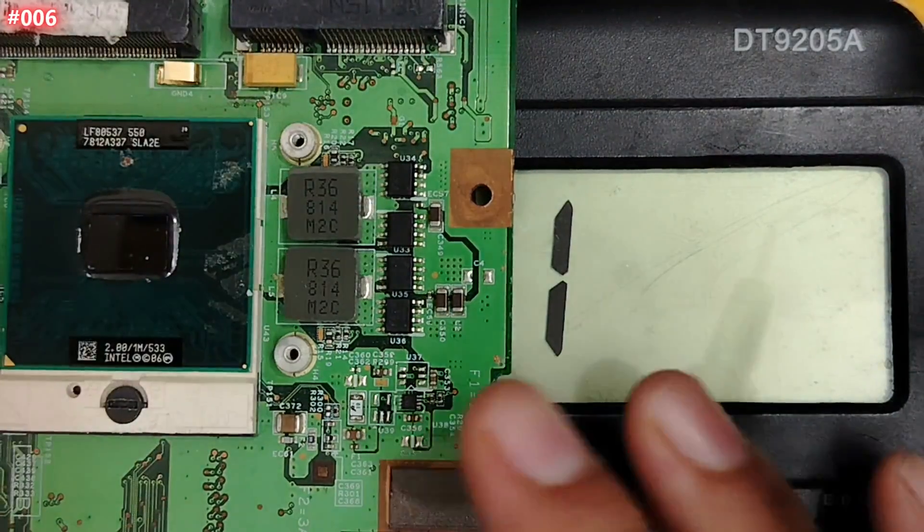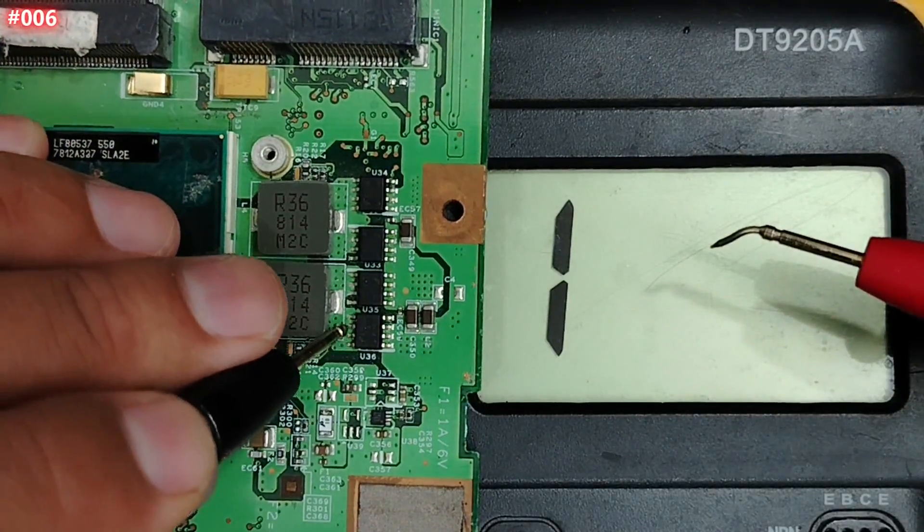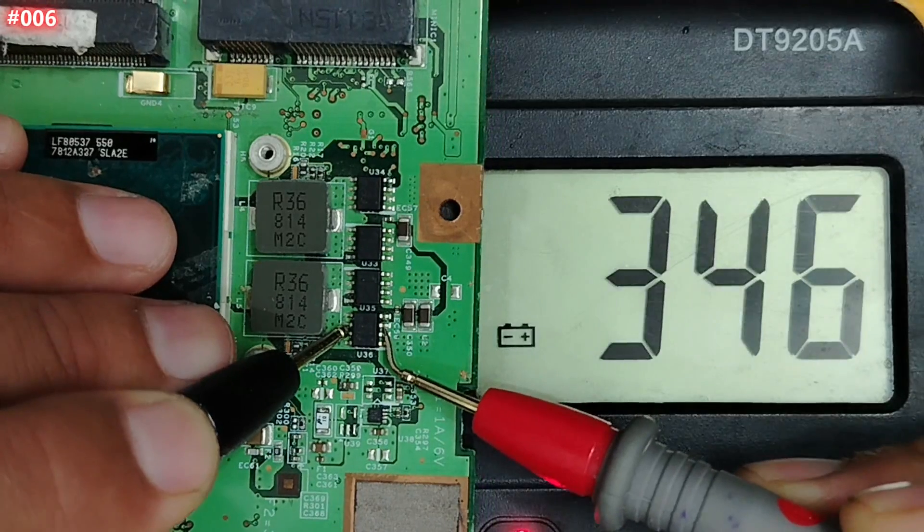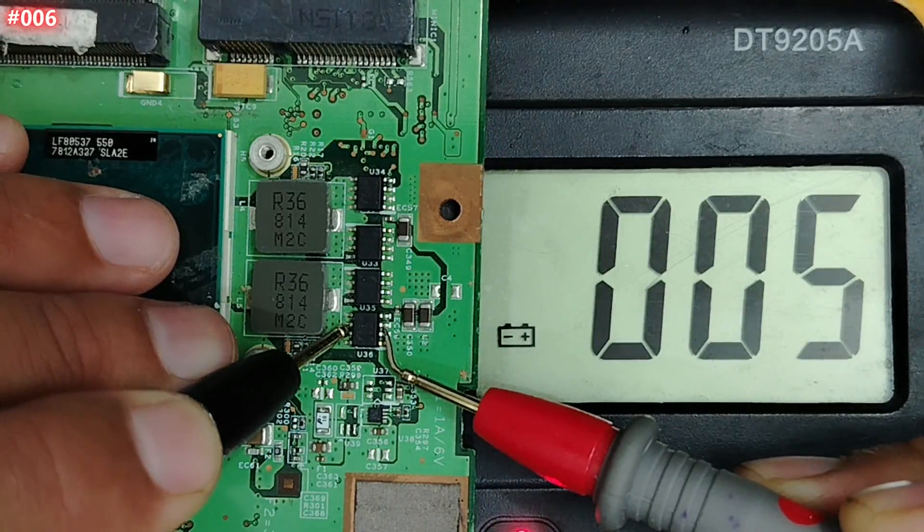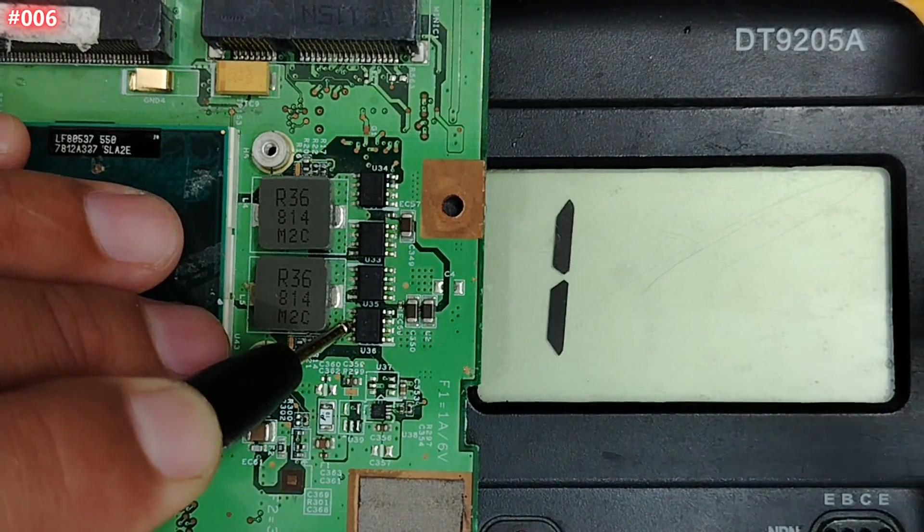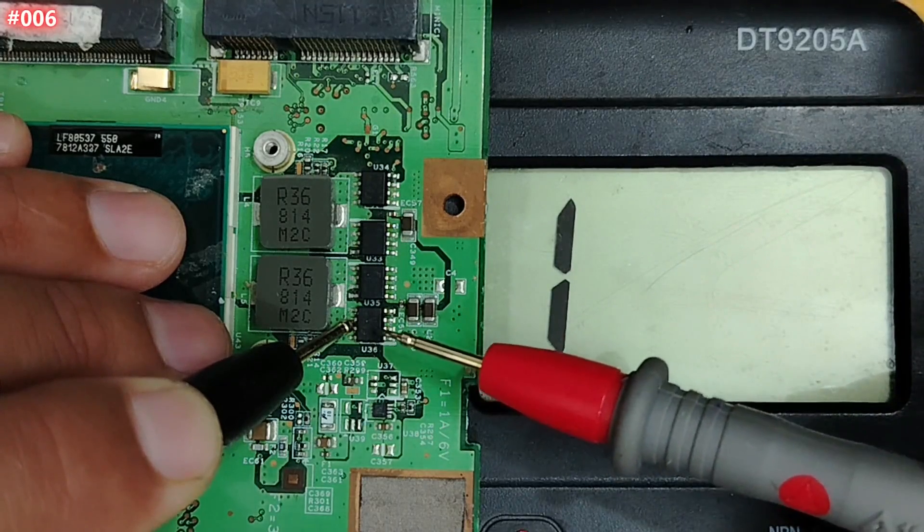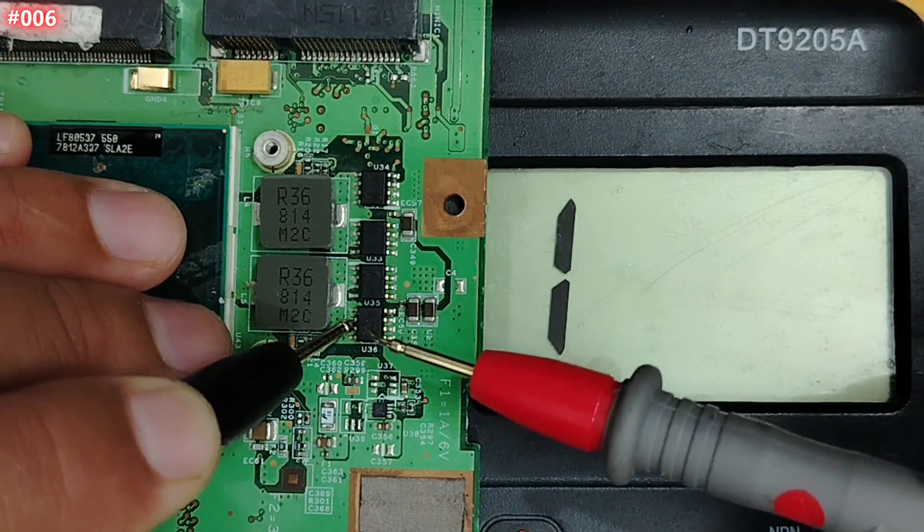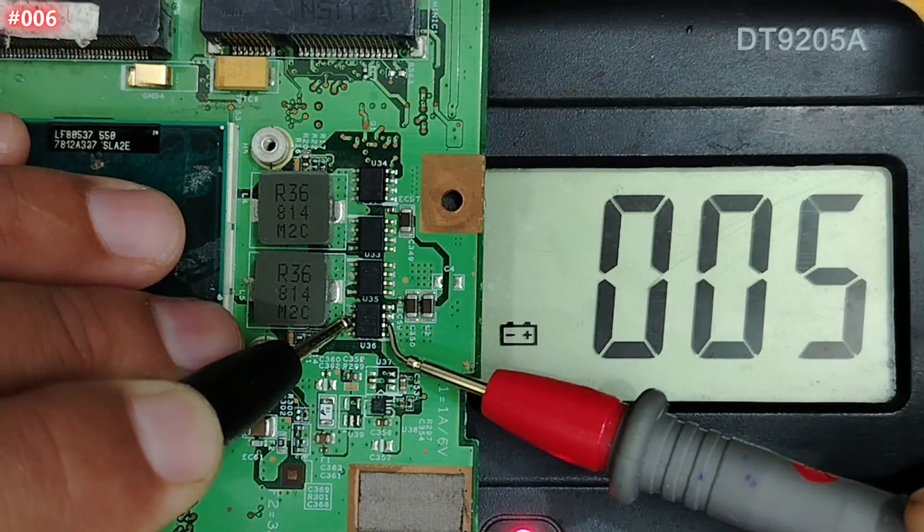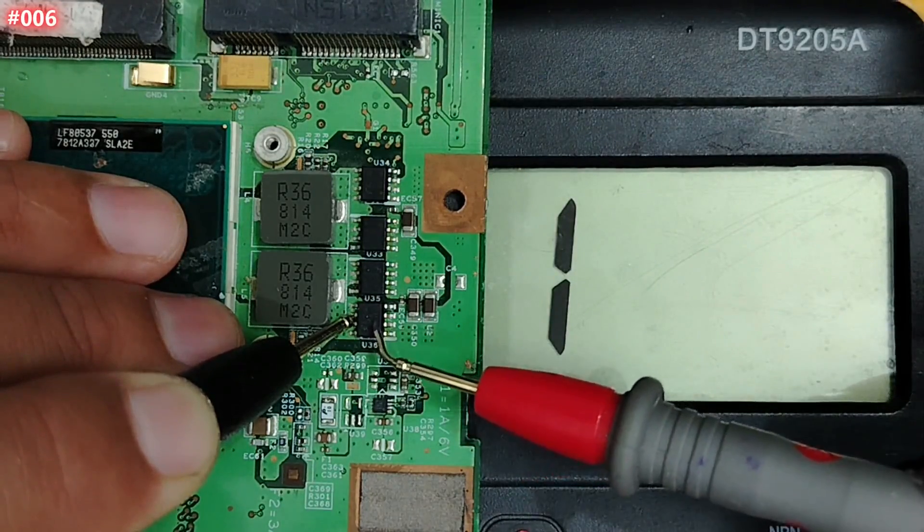So to test this MOSFET, my friends, you have just to put one probe in the drain everywhere, in every pin here, and the other probe in the source. Do you see, guys? Here we have a problem. We get a low reading. But my friend, this is not a short, because this is what I want to tell you and to teach you. Many technicians and beginners, when they check some MOSFETs and get a low reading like this, they think that this is a short, and then they remove the MOSFET.